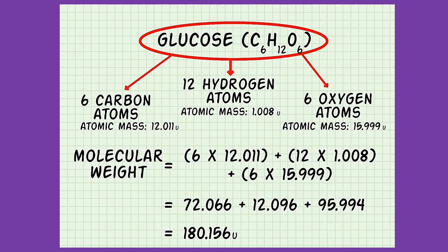In calculating the molecular weight of glucose (C6H12O6), the atomic mass of carbon is 12.011 AMU, the atomic mass of hydrogen is 1.008 AMU, and the atomic mass of oxygen is 15.999 AMU. There are 6 carbon atoms, 12 hydrogen atoms, and 6 oxygen atoms. Adding up the mass of all the atoms in glucose gives a molecular weight of 180.156 grams per mole.